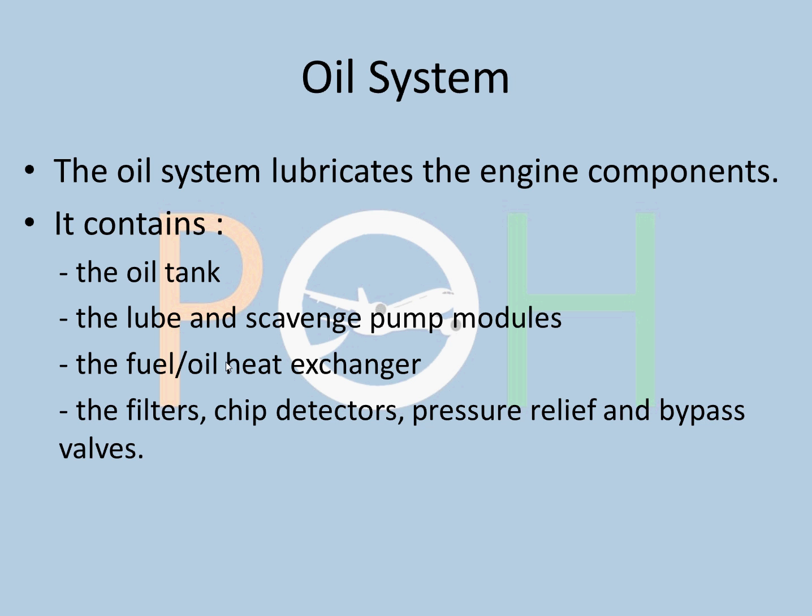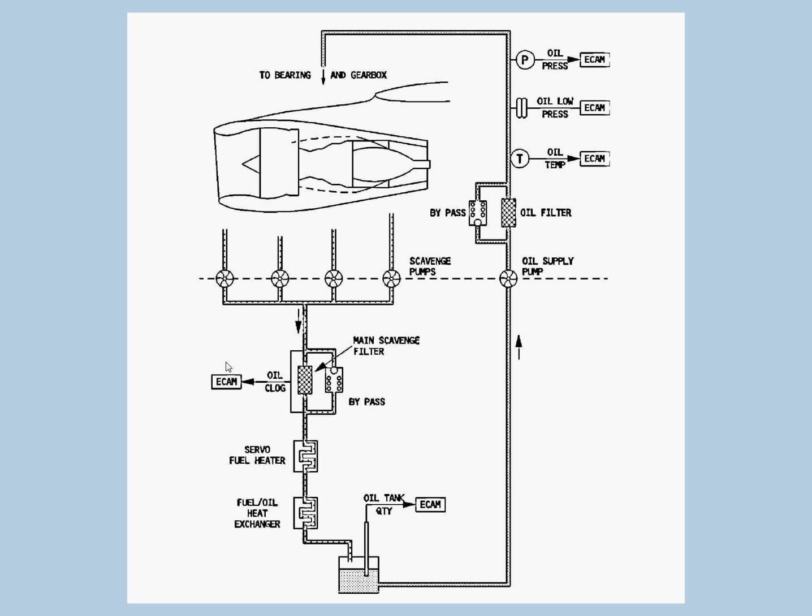The oil system is pretty simple. Oil system lubricates the engine components. It contains the oil tank, the lube and scavenge pump modules, the fuel oil heat exchanger, the filter, chip detectors, and pressure relief and bypass valves. This is the reservoir, the oil reservoir. The oil tank quantity for the engine is given on the ECAM. 9.5 quarts is the minimum, plus 0.5 quarts per hour of flying.